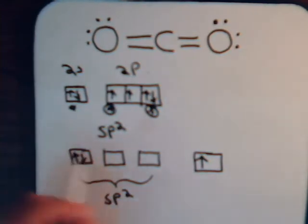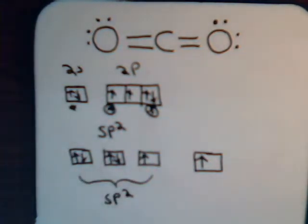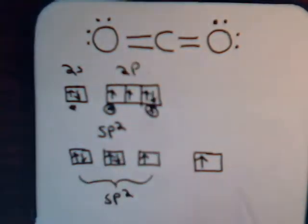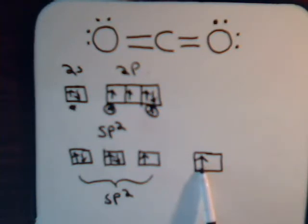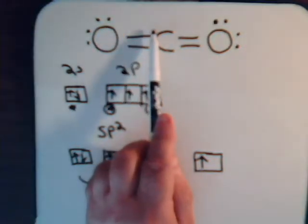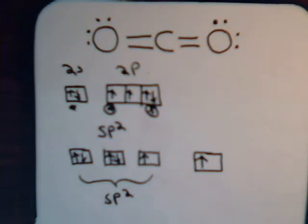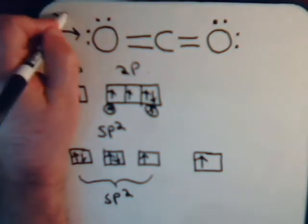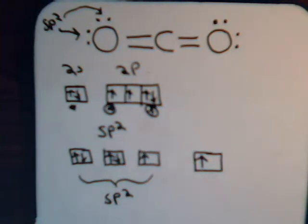One sp2 orbital has an electron pair, another has an electron pair, and we have a single electron. So oxygen can use an sp2 orbital to form a sigma bond — the sp2 orbital of the oxygen atom overlapping with the sp orbital of carbon. It has an unhybridized p electron to share with one of carbon's leftover p electrons to form the pi bond. These unshared electrons would be sp2 electrons.